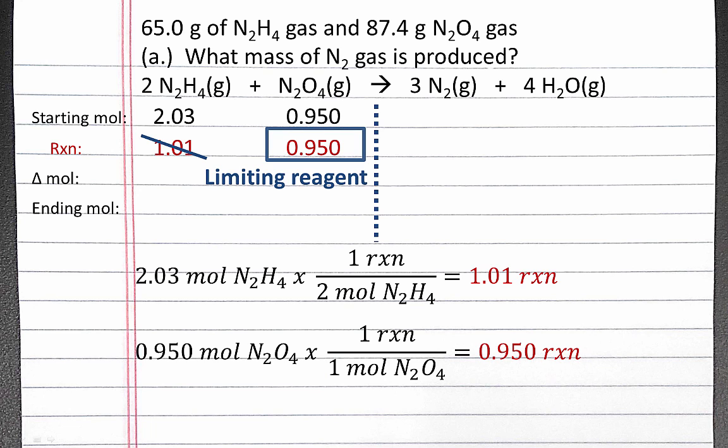The reactant that can perform the fewest reactions is our limiting reagent. In this problem, N2O4 is our limiting reagent because it can produce the smallest number of reactions. It will run out first, and thus limit how much product we can produce.